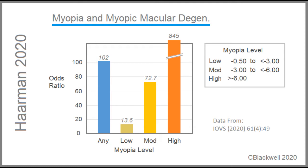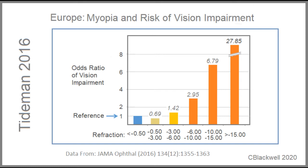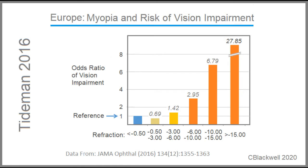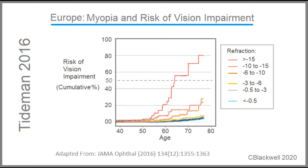The next question is how much do these complications affect vision? A 2016 study looks at myopia and risk of vision impairment using odds ratio, with people without myopia as the reference at a ratio of one. Risk of vision loss is low with low myopia but increases steadily, roughly doubling with each step up in myopia, until it reaches an extreme at minus 15 diopters. Looking at cumulative risk with age, reduced vision segregates according to myopia level, particularly above minus 6.